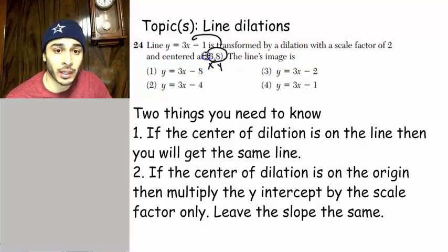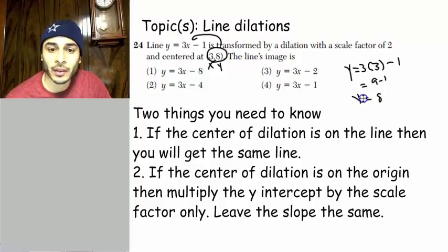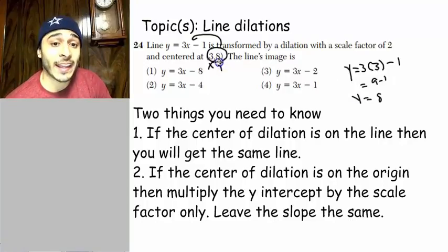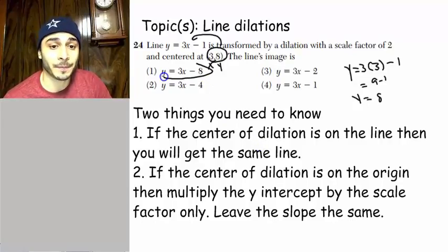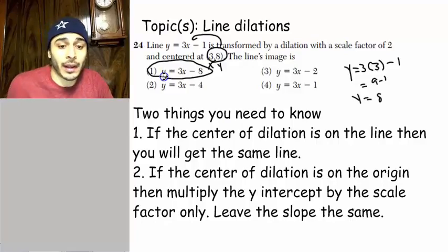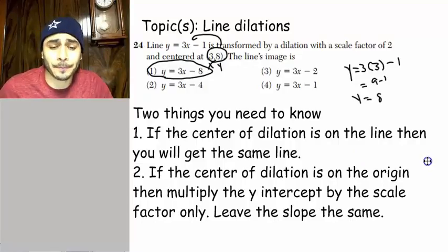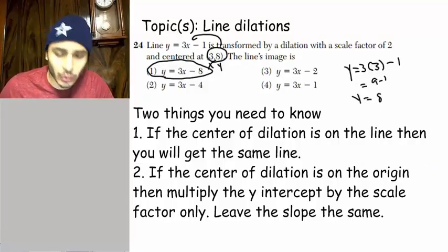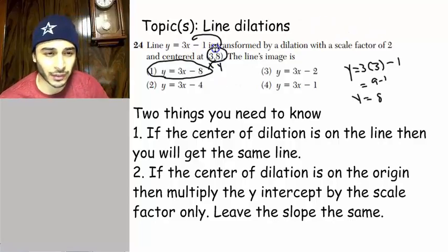Well, let's plug it in. Let's take 3 and we'll plug it in. 3 times 3 minus 1. What will we get for y? Well, we will get 9 minus 1, which is 8. Y does equal 8. So, this point, it is on that line. And I just told you that if the center of dilation is on the line, then you will get the same line. All right, now what happens if the center of dilation is on the origin? If the center of dilation is on the origin, then all you have to do is just multiply the y-intercept by the scale factor. But that's not the case here. So, we're not going to do that.